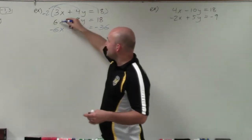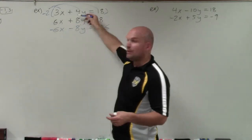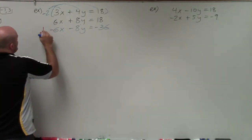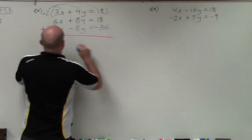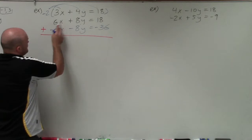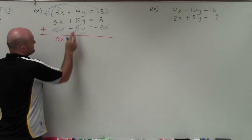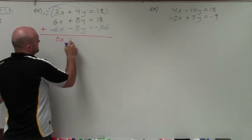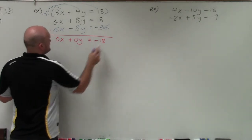So now that I have coefficients exactly the same, one positive, one negative, I can now add the two equations. So I usually don't write this out, but for this case, I'll do that. 6x minus 6x is 0x. 8y minus 8y is 0y equals negative 18.